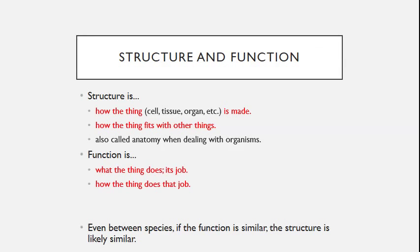Function is what a thing does, its job, and how it does that job. This is also called physiology. When we dissect, we'll refer to it as comparative anatomy, because we'll compare the structures of our human organs to those of another organism. If another organism's organs have a similar function, the structures of the organs are likely similar.